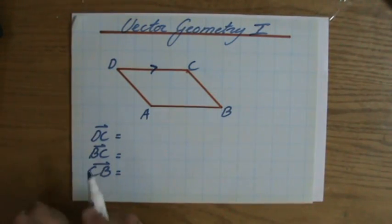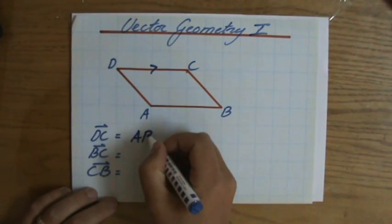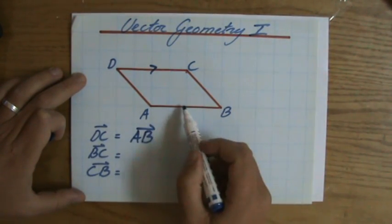the same magnitude and the same direction? That is AB. So the vector DC is the same as the vector AB.